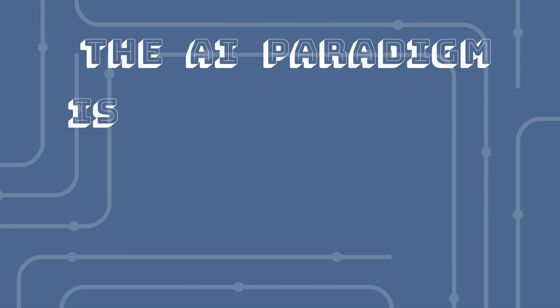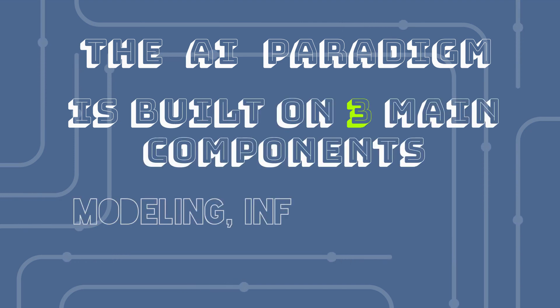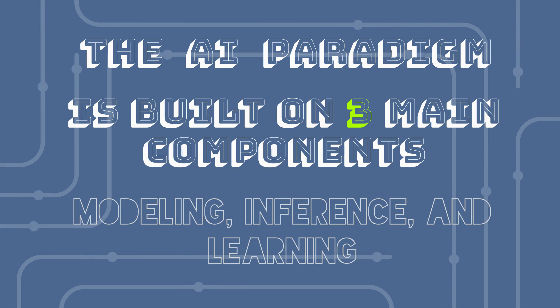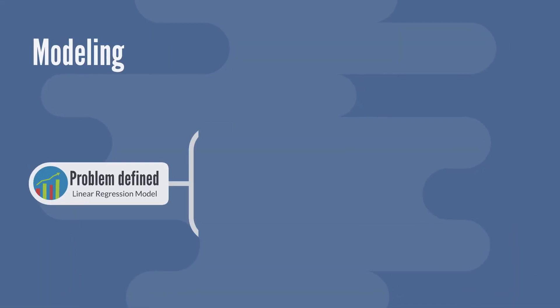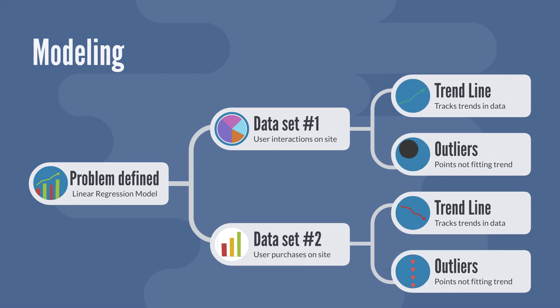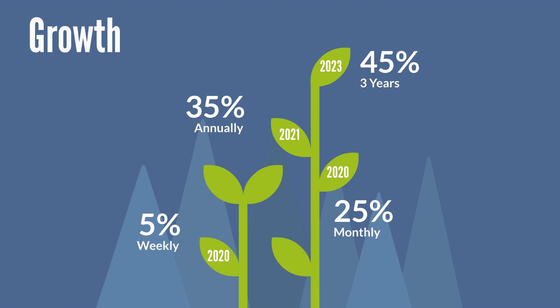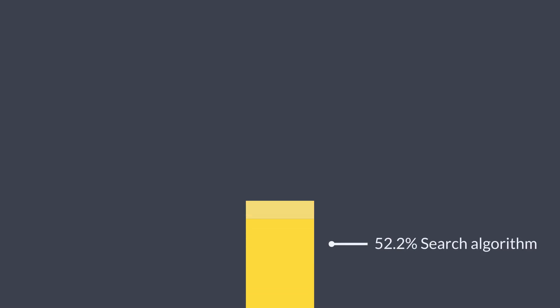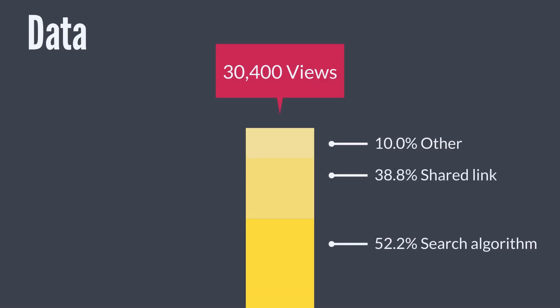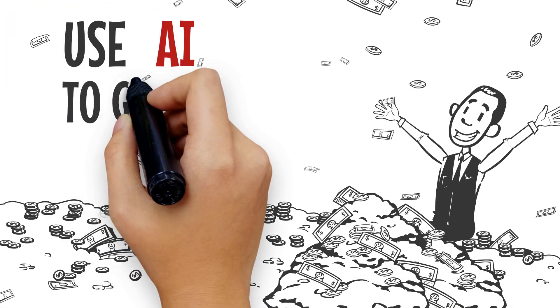The AI paradigm is built on three main components: modeling, inference, and learning. In modeling, the problem to be solved is defined and a mathematical representation of it is created. In inference, this model is used to make predictions or decisions based on input data.